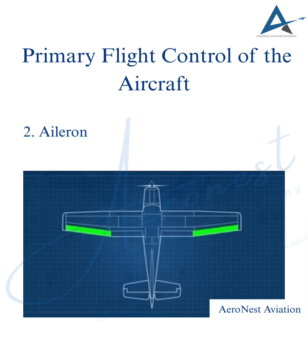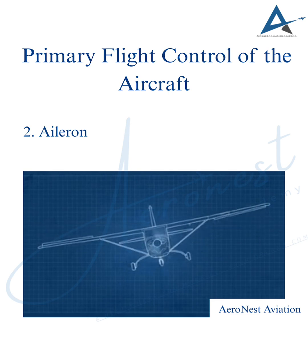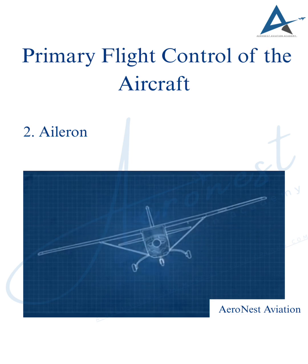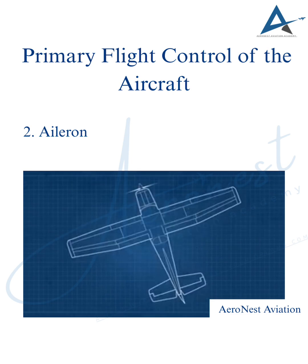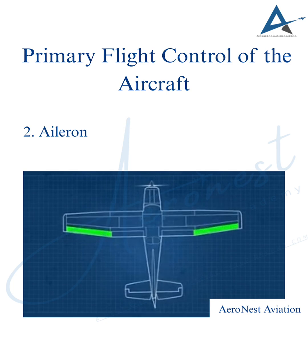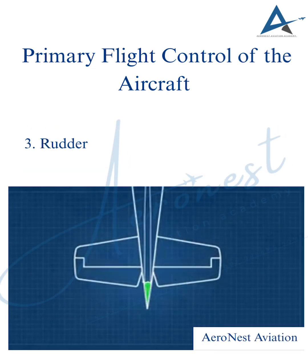Next up, the aileron, found on the outer edges of the wings. Ailerons control roll, which helps the aircraft bank left or right. They're essential for turning smoothly and maintaining lateral balance.